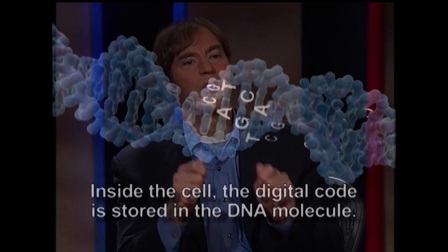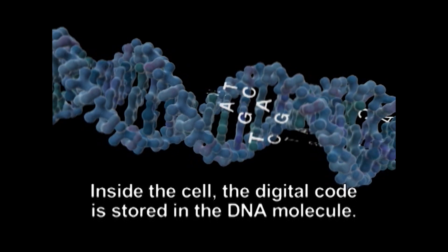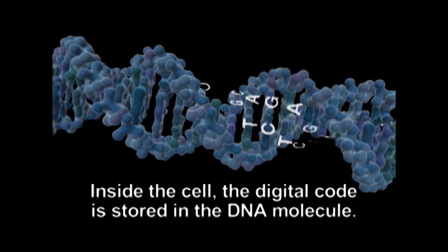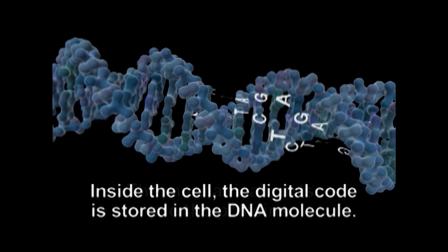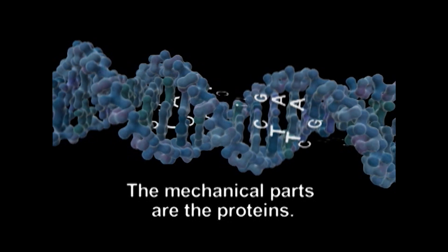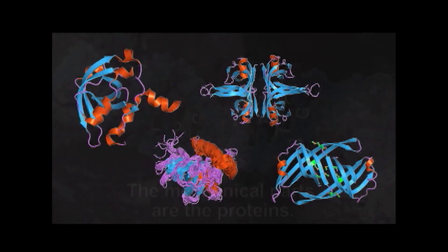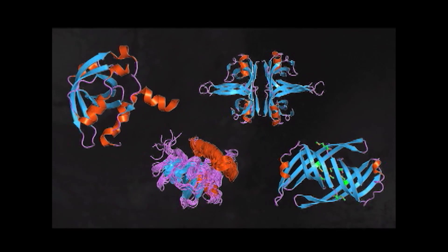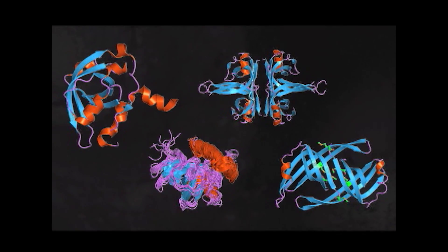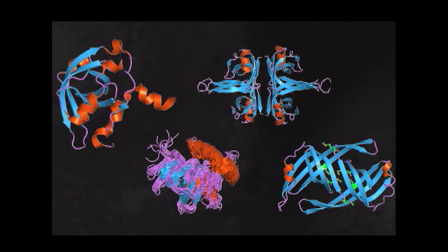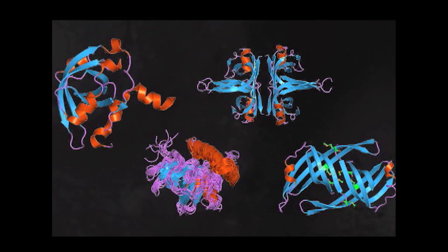It turns out the exact same thing is happening inside the cell. The digital code is stored on the DNA, and the mechanical parts are the proteins. And each one of them does a job in virtue of its three-dimensional shape, just like the tools in your toolbox.